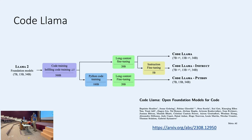CodeLlama is not truly open source because there is a clause in their license saying you cannot use it if you have more than several hundred million users — practically, this only applies to the top five companies like Amazon or Microsoft. For everybody else, we can actually use this model commercially and build on top of it. I went through all of this to set context on why we chose CodeLlama for today's presentation. As of today, this is the best model you can use to train on.